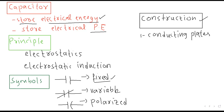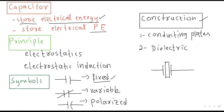دوسرا حصہ dielectric medium ہے۔ دو conducting plates کے درمیان میں ایک medium رکھ دیتے ہیں جسے dielectric کہتے ہیں۔ Dielectric ایک electric insulator ہے جو charges کو آگے نہیں جانے دیتا۔ یہاں پر air بھی present ہو سکتی ہے۔